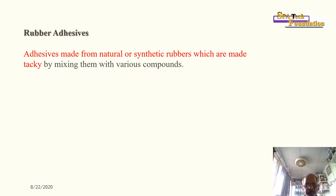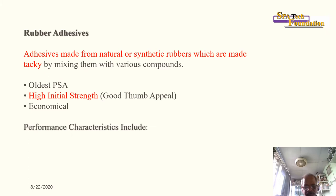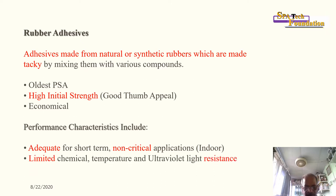Rubber adhesives are made from natural or synthetic rubber, made tacky by mixing with various compounds. They are the oldest PSA type, offering high initial tack, good thumb appeal, and are economical. Performance characteristics include adequacy for short-term, non-critical indoor applications, but with limited chemical, temperature, and UV light resistance.